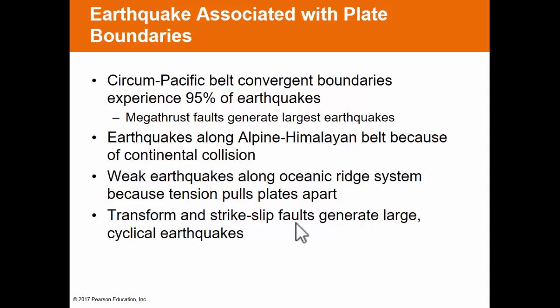About 95% of earthquakes occur in the circum-Pacific belt at convergent plate boundaries. Those megathrust faults generate the vast majority of the world's earthquakes. There are also earthquakes along the convergent boundaries of the Alpine-Himalayan belt. Weaker earthquakes occur along the oceanic ridge system due to tension at diverging plate boundaries. Transform and strike-slip faults can generate large cyclical earthquakes that happen on a fairly frequent time frame in generally the same location.